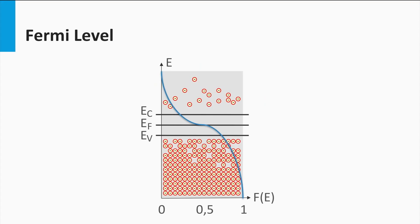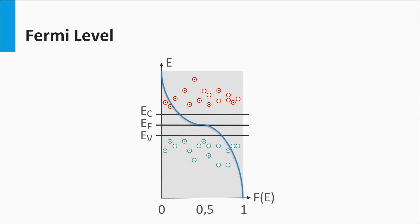Using the Fermi-Dirac function you can also tell something about the distribution of holes in the valence band. The positions in the valence band at which electrons are missing are the locations at which holes are present, indicated by the blue dots. So if we remove the fixed electrons in the valence band we are left with only the mobile charge carriers — the free electrons and the free holes.